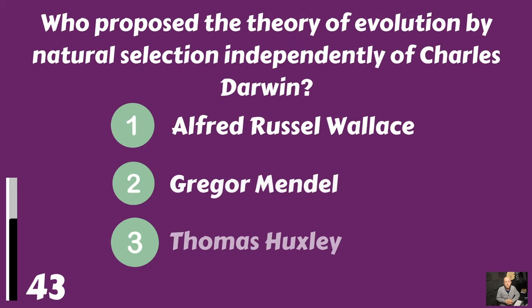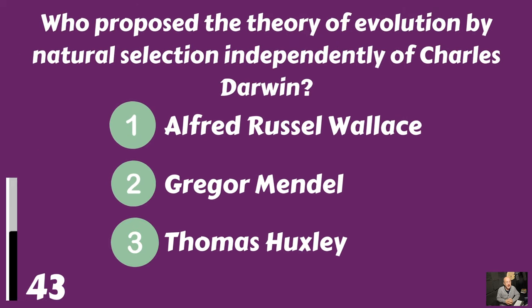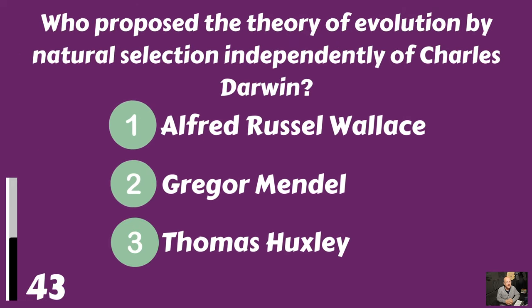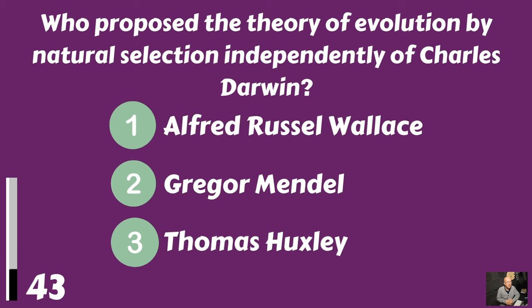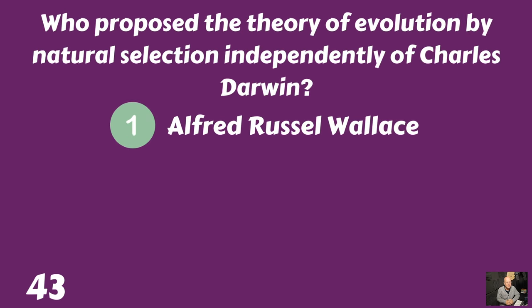Who proposed the theory of evolution by natural selection independently of Charles Darwin? Was it Alfred Russell Wallace, Gregor Mendel, or Thomas Huxley? It was Alfred Russell Wallace.